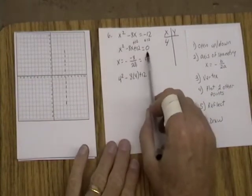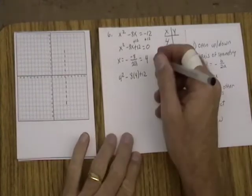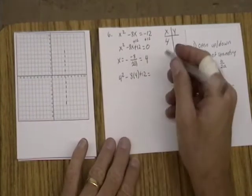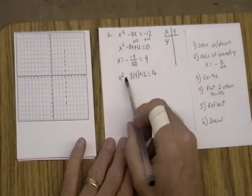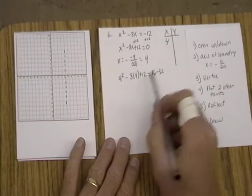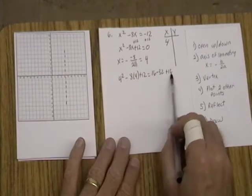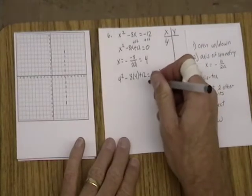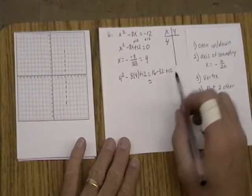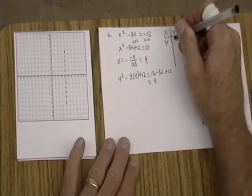So we're going back to this standard form is what we're going to use. And so that's going to equal 16 minus 32 plus 12. So everything in here is accounted for on the next line. And then 16 minus 32 is negative 16 plus 12 is 4. So when x is 4, y is 4.